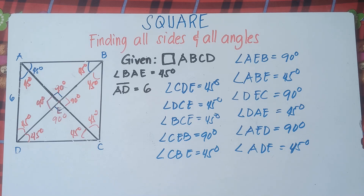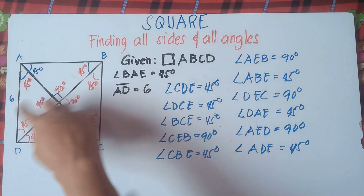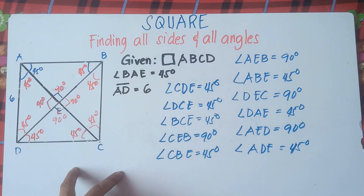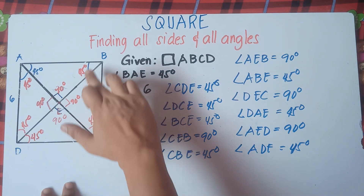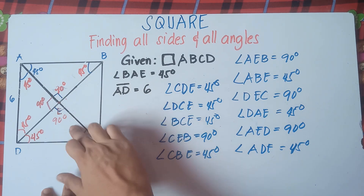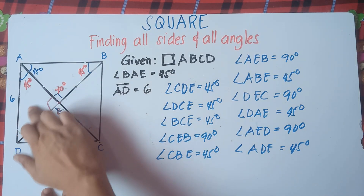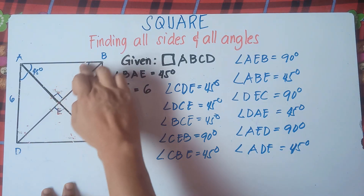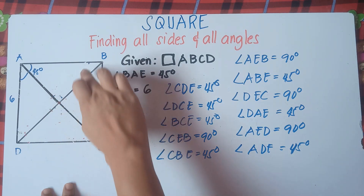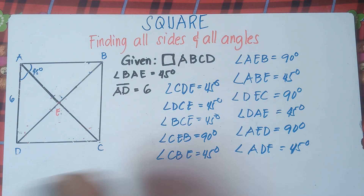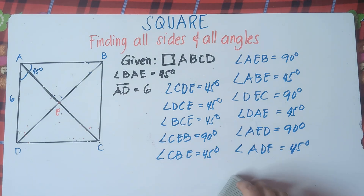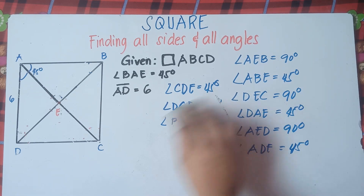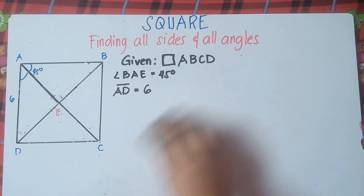If you have some questions, please do not forget to leave a comment. We will answer that. Now we're done with the angles. Let's go to the sides. Let me erase these angles so that we will not be confused. You pause the video, class, and check the angles. These are the angles of a square. So let's deal with the sides now.